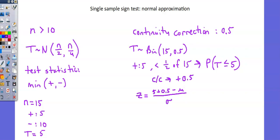And in this case, I can replace my variables. The mean is going to be n over 2, that's 15 over 2. And the standard deviation is the square root of n over 4, or the square root of 15 over 4.